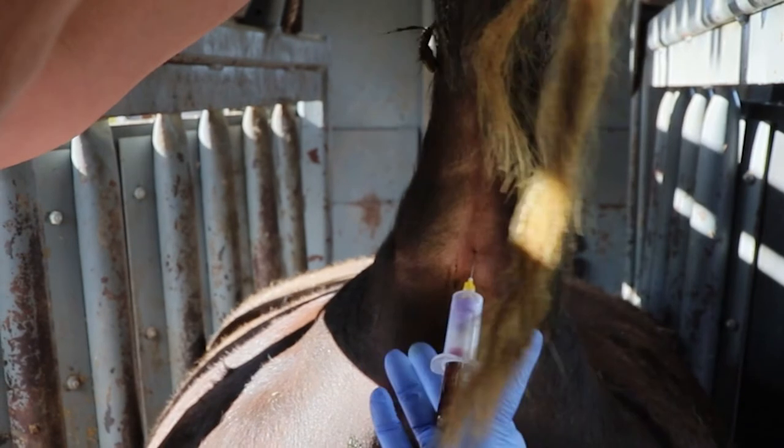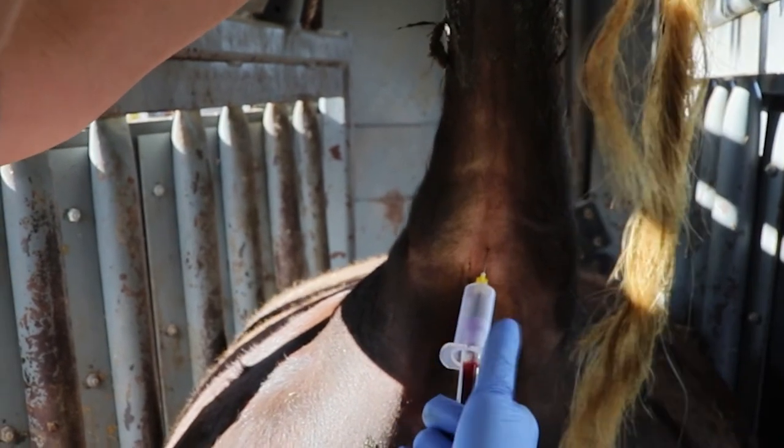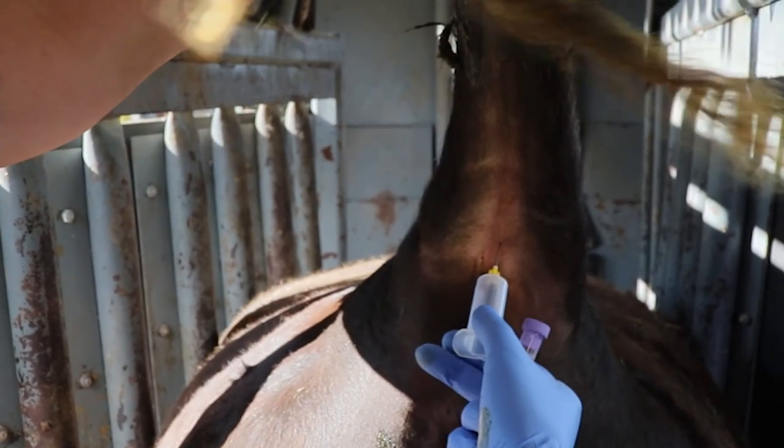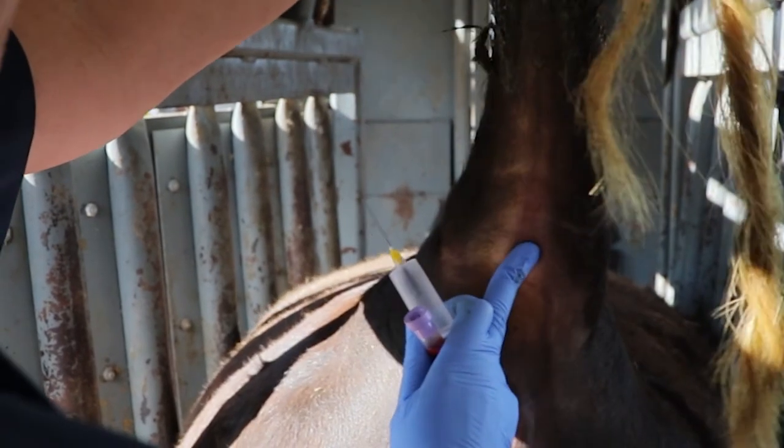If you take out the tube first before the needle, suction on the blood vessel stops and there's less chance of a hematoma. You may still apply some pressure and then you're done.